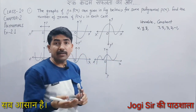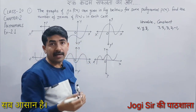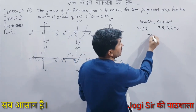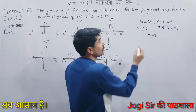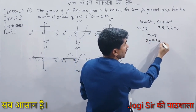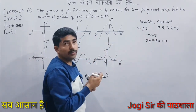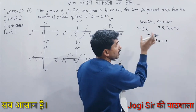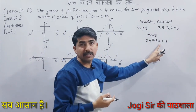In polynomials, operations like multiplication, division, addition, and subtraction can occur. For example, 7x plus 5 is a polynomial — it is a polynomial in one variable. And 5y squared minus 8x plus 4 is a polynomial in two variables, since both y and x are present.